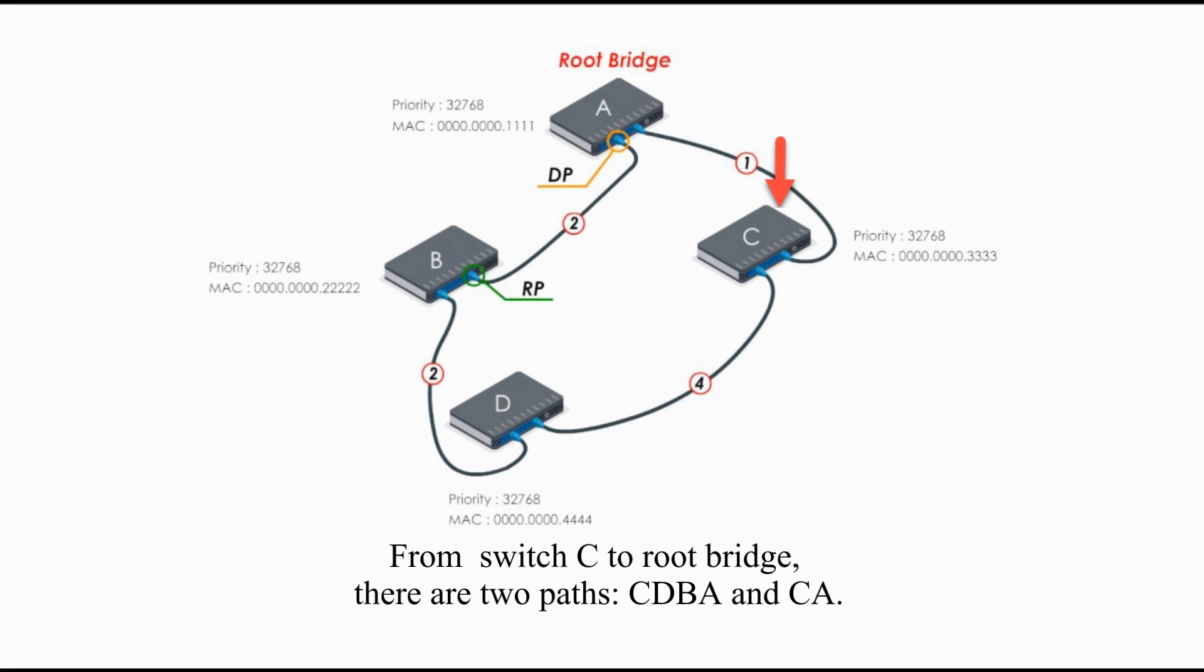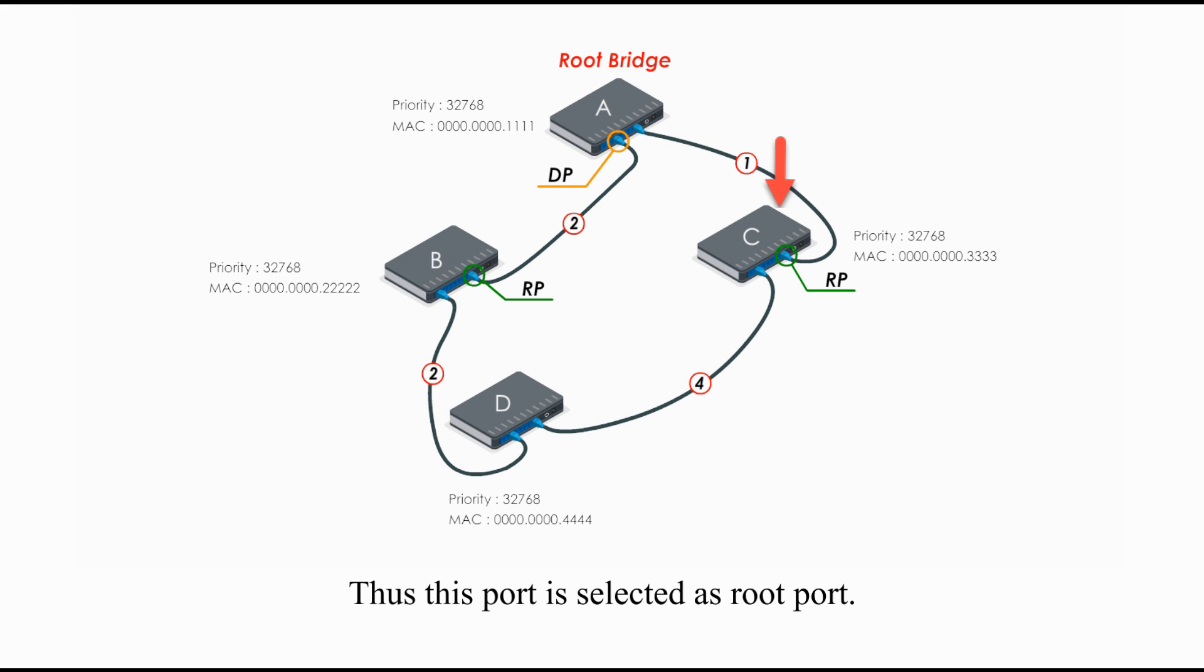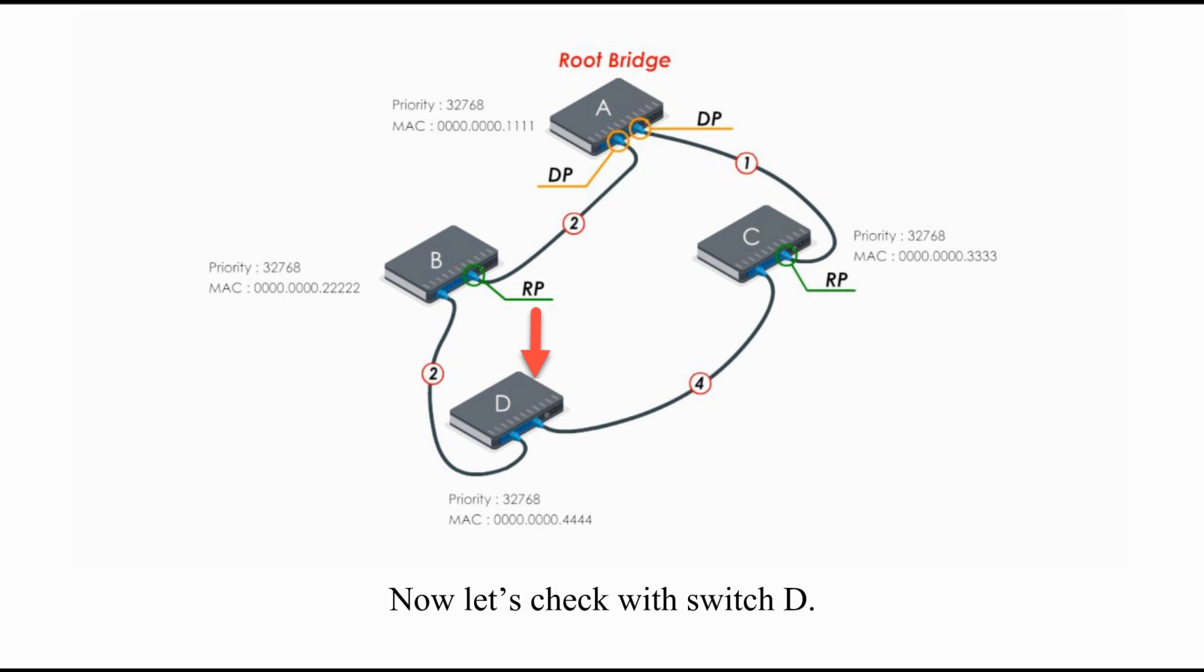From switch C to root bridge, there are two paths: CDBA and CA. The shortest path is CA because it costs 1. Thus, this port is selected as a root port, the other end is selected as a designated port.